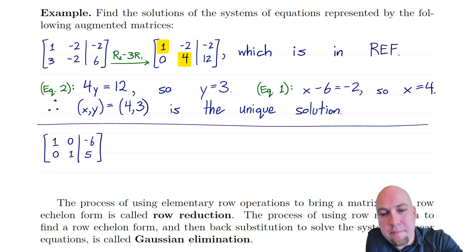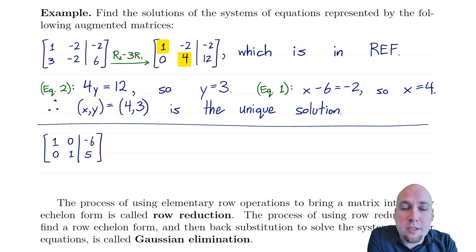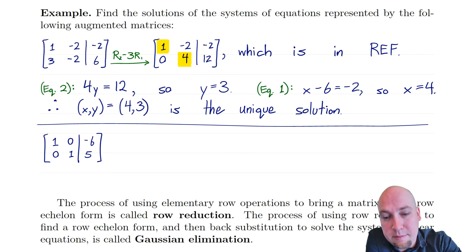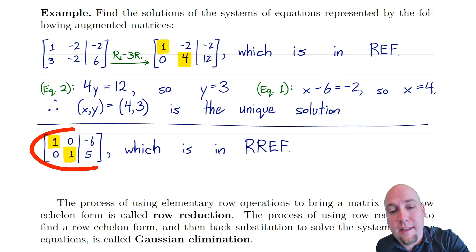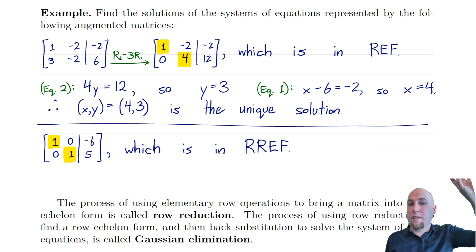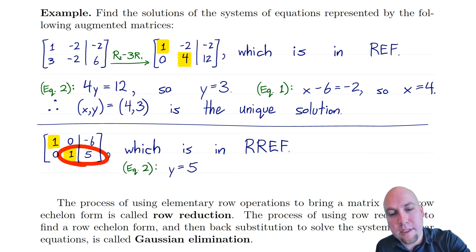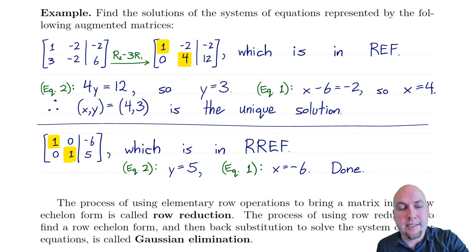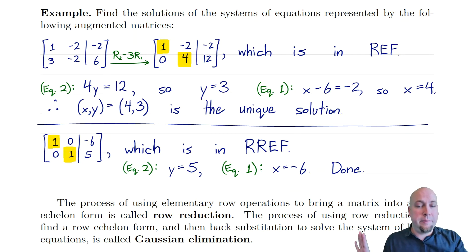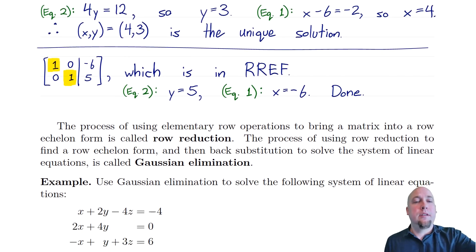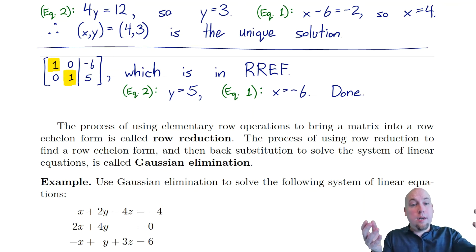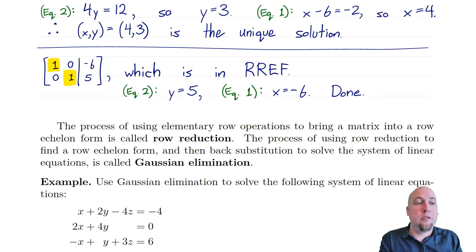Now let's start with an example already in reduced row echelon form. This augmented matrix represents one times x plus zero times y equals minus six, and zero times x plus one times y equals five. Since it's in reduced row echelon form, we can just read off the solution: the bottom equation gives y equals five, and the top equation gives x equals minus six. No back substitution needed.